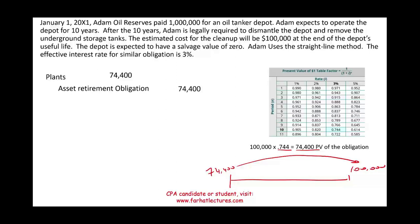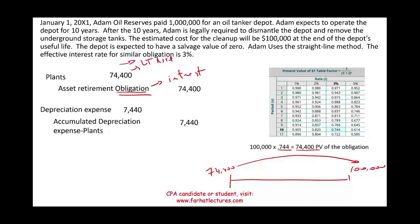What comes with each obligation? Interest. And what comes with each long-term asset? Depreciation. Let's start with depreciation: we depreciate this ARO-related asset over 10 years as well. Therefore, every year we debit depreciation expense $7,440 and credit accumulated depreciation — plants — $7,440.